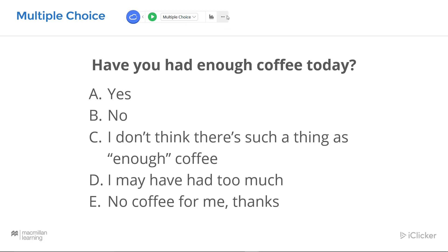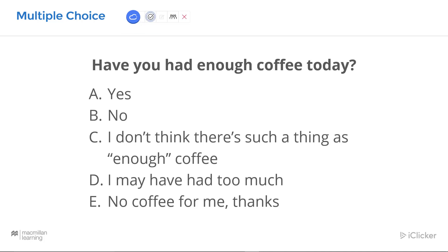To ask a multiple choice question, be sure to have selected the proper question type, then have a question ready to ask your students. When everything is ready, click the green circle with the triangle to turn the poll on. You can minimize the toolbar while a poll is running, and a pulsing icon appears to indicate that a poll is running. If you minimize the toolbar further, the cloud icon will pulse to remind you that a poll is running.